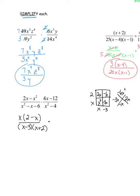The numerator of the second fraction — 4x − 12 — looks linear, but it has a GCF of 4: that gives 4(x − 3). It's important to factor this because the (x − 3) factors will cancel. The denominator of the second fraction is a difference of squares: x² − 4 factors into (x + 2)(x − 2). Square root of 4 is 2.